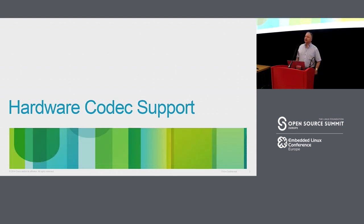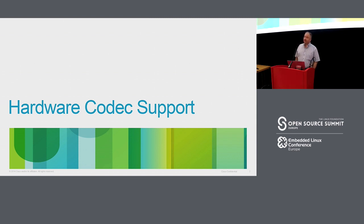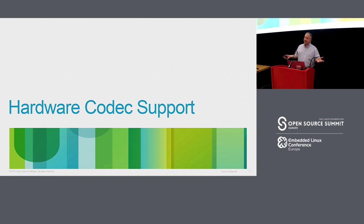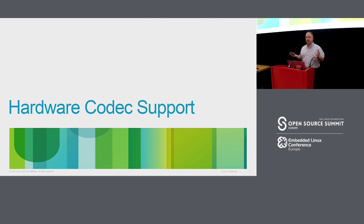There are two main topics today. The biggest one is hardware codec support, because that has seen a huge amount of work in the past year and a half. What was particularly interesting was how many different people, developers and organizations were involved — from Bootlin, Collabora, Google, Pengutronics, Outreachy — making it really interesting to see all these different companies working together to make a good API for a certain class of hardware codecs.